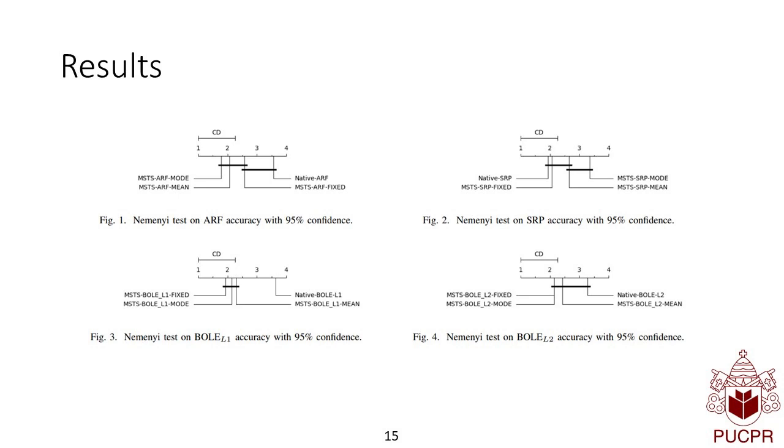That means if a pair of methods is different from the critical difference, they are statistically different, as we say. We can see here that ARF-TH, the adaptive random forest, presented better results than the native counterpart.